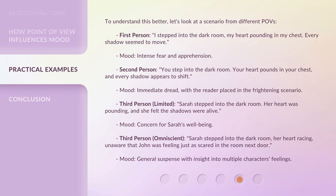Third person limited: 'Sarah stepped into the dark room. Her heart was pounding and she felt the shadows were alive.' Mood: concern for Sarah's well-being. Third person omniscient: 'Sarah stepped into the dark room, her heart racing, unaware that John was feeling just as scared in the room next door.' Mood: general suspense with insight into multiple characters' feelings.